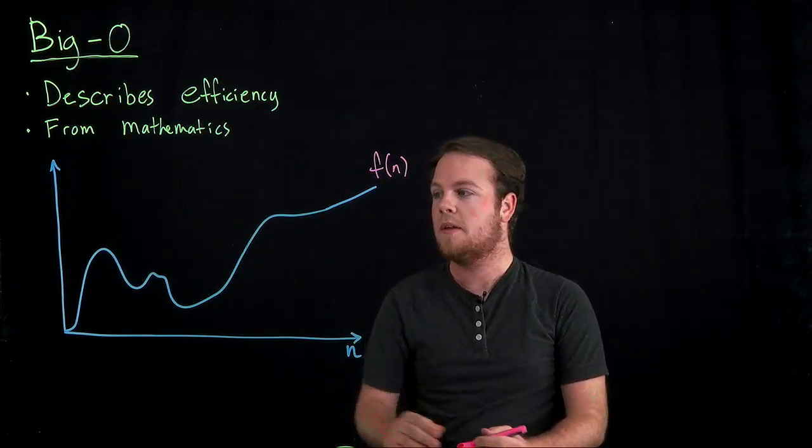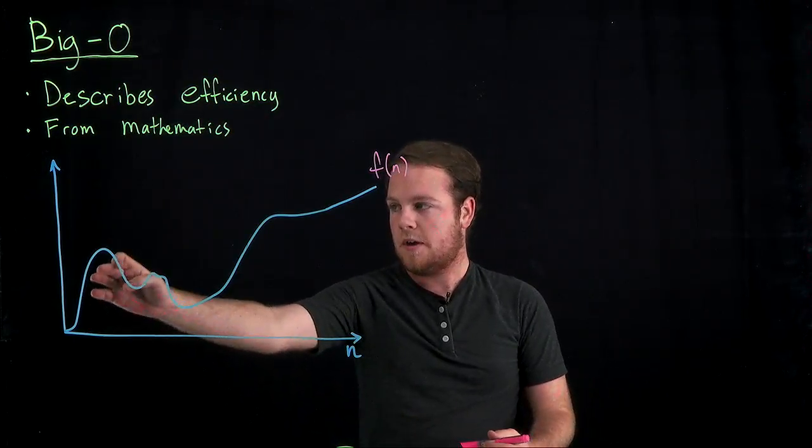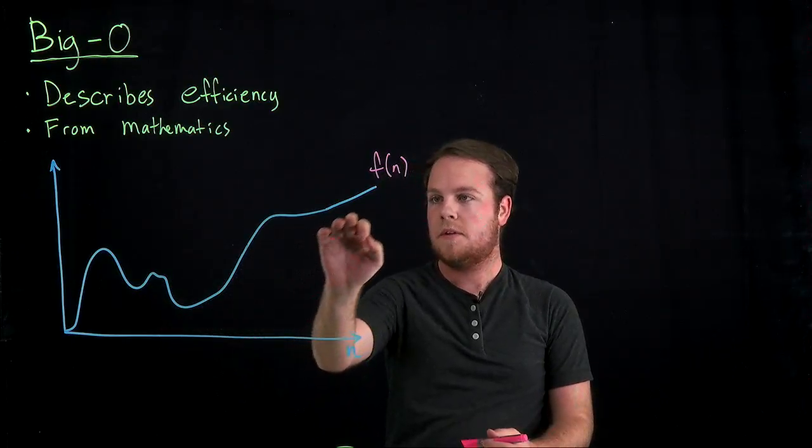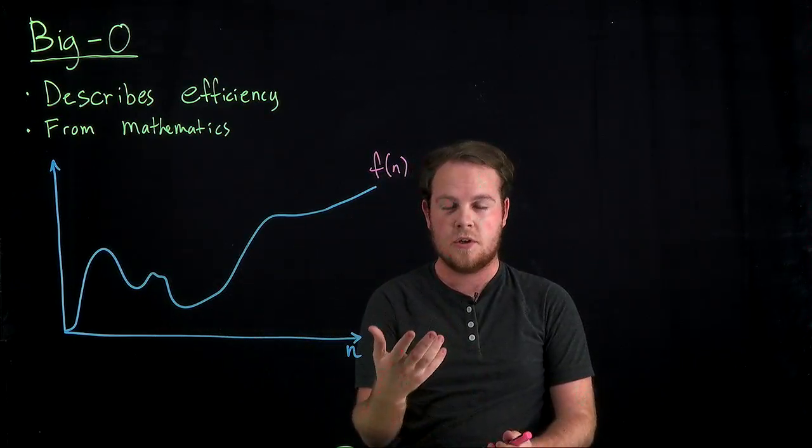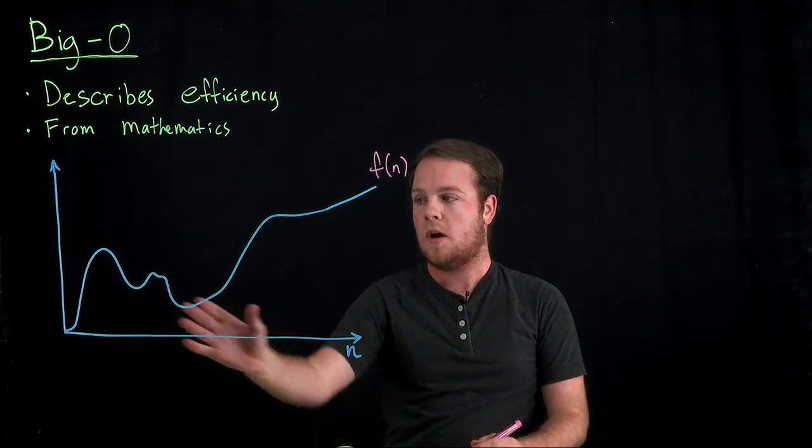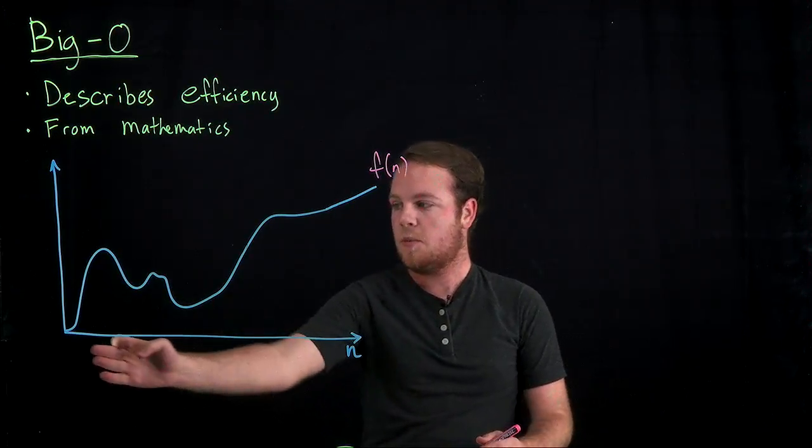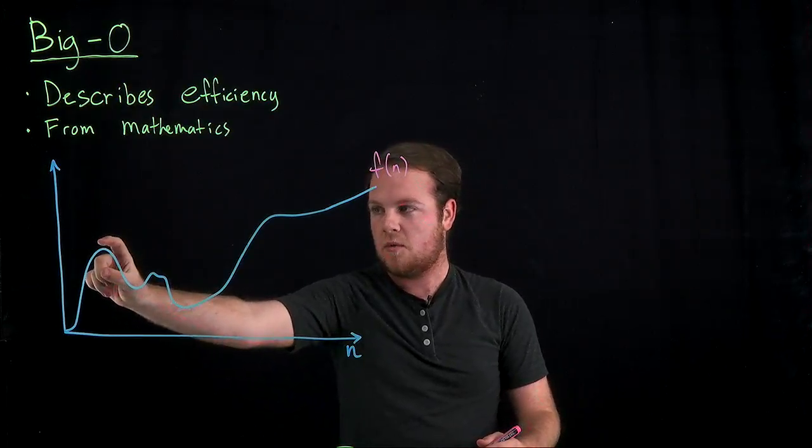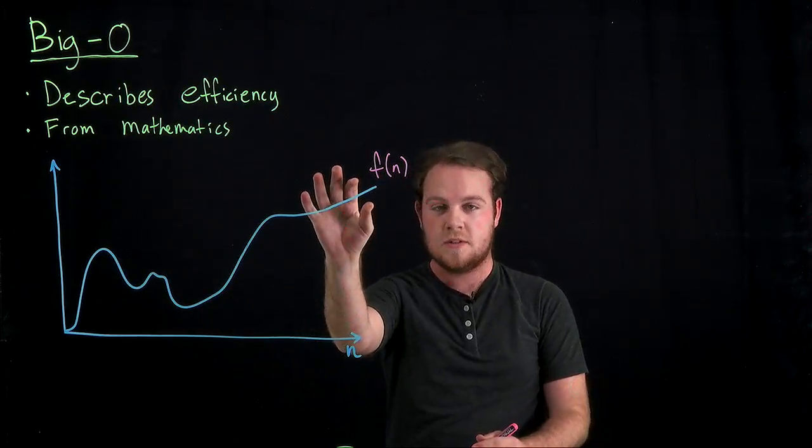And the height of this graph determines, or it shows, how much work is required to accomplish this task. So for smaller inputs, it requires this amount of work. For larger inputs, it requires this amount of work.